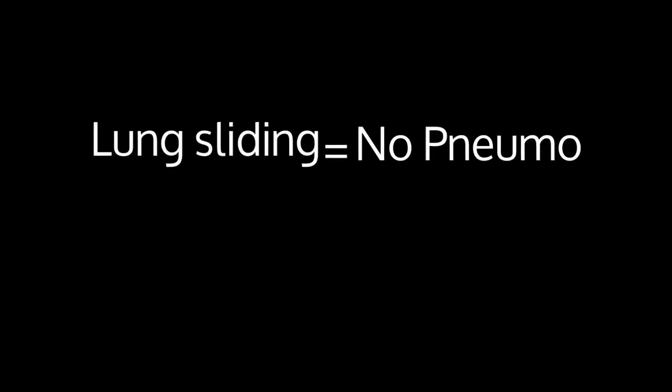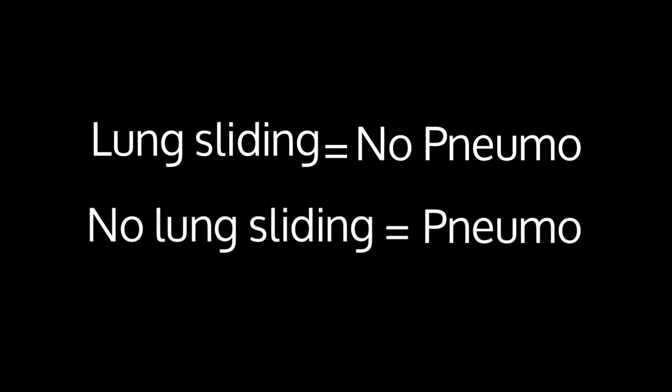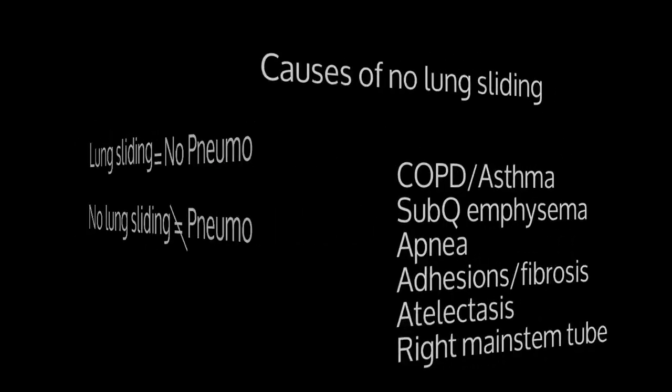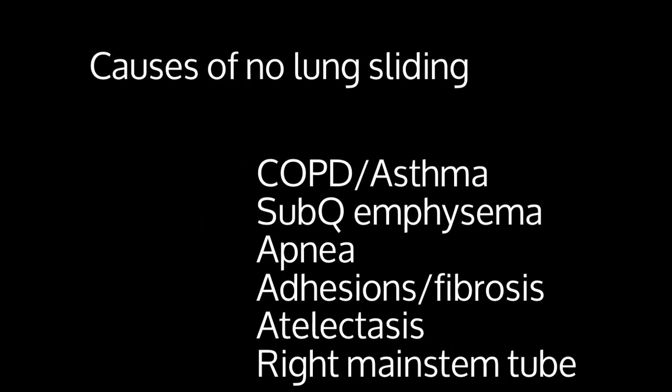If you find an area of the lung that does have lung sliding, you can be pretty confident that there's no pneumothorax there. However, if you don't see lung sliding, it does not mean that they do have a pneumothorax. The reason for this is that there are a few other causes of the lack of lung sliding: COPD, asthma, subcutaneous emphysema, and apnea are some of the main reasons.